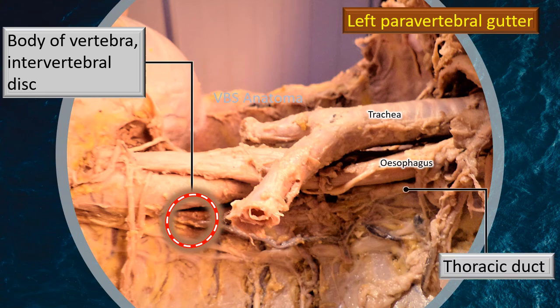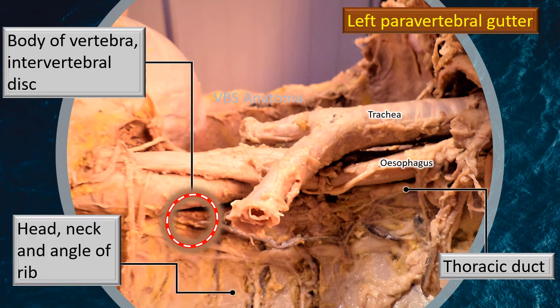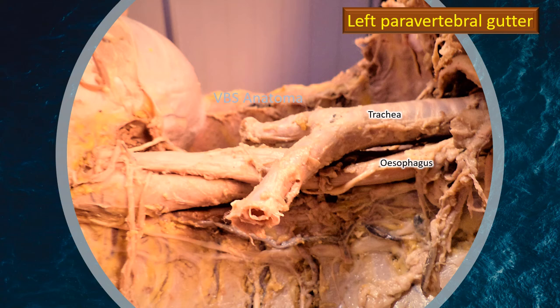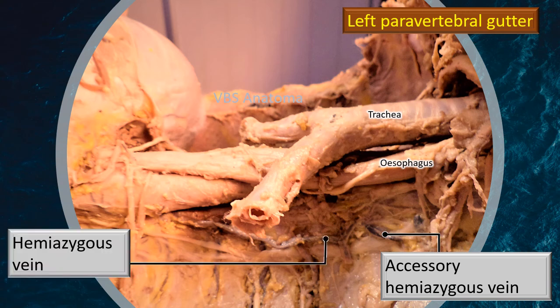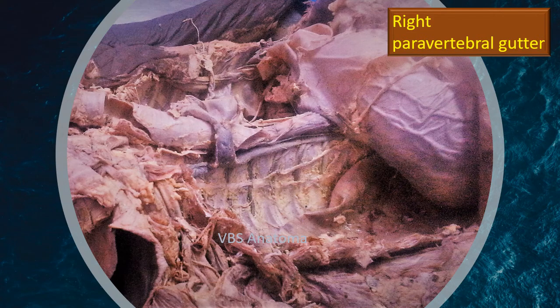That is the thoracic duct, closely related to the oesophagus at this position. Just as shown in the cross-section photograph, you can see the ribs — head, neck, and angle — and along the lower margin of each rib, the posterior intercostal vessels and the intercostal nerve. We are on the left paravertebral gutter, so we see two veins: the accessory hemiazygos and the hemiazygos veins — the upper one being the accessory hemiazygos and the lower one the hemiazygos. You can actually see the posterior intercostal veins joining the hemiazygos or accessory hemiazygos vein.